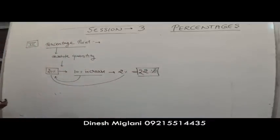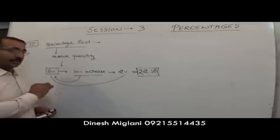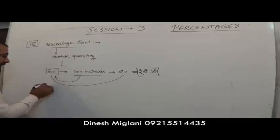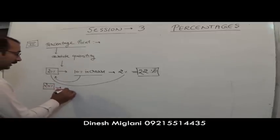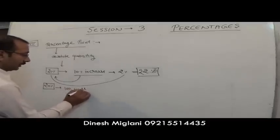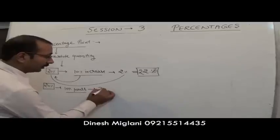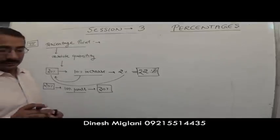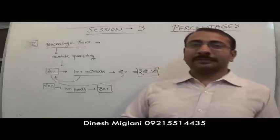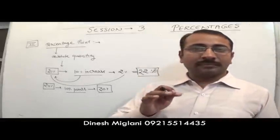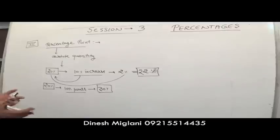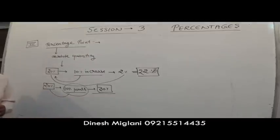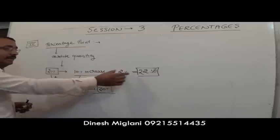But if instead it is stated that the number 20% is increased by 10 percentage points, then it becomes 30%. Because percentage point is an absolute quantity — you simply add it directly. If there is a percentage point increase, add; if percentage point decrease, subtract. Otherwise, find the percentage and then add or subtract.